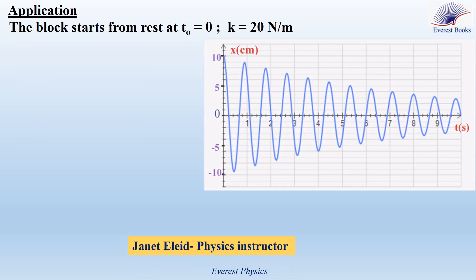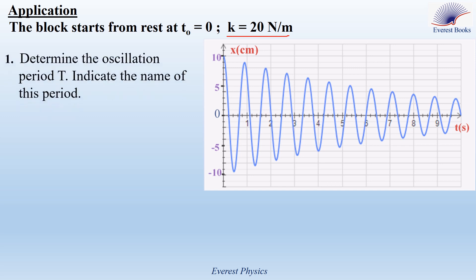Now let's move to the application. This graph shows the abscissa of the center of mass of the block of a horizontal elastic pendulum as a function of time. The block starts from rest at t₀ equals 0. Given that the force constant of the spring is 20 N/m, take the horizontal plane containing G as a reference level for gravitational potential energy. At equilibrium, G coincides with the origin of the x-axis. Determine the oscillation period T and indicate the name of this period.